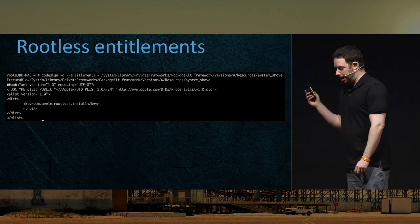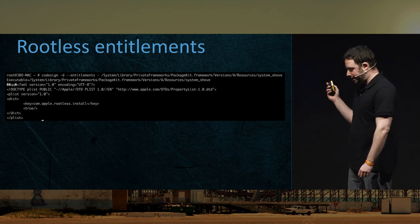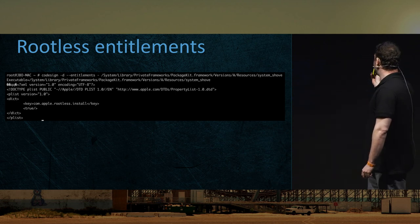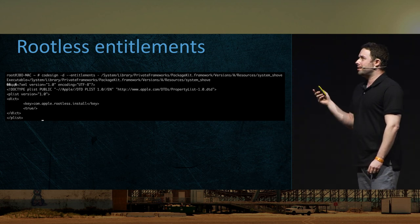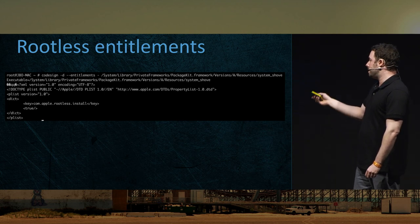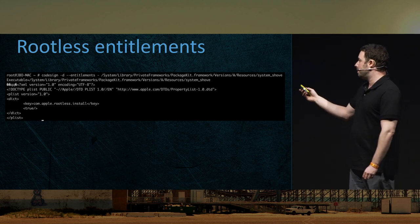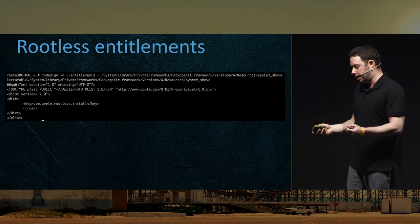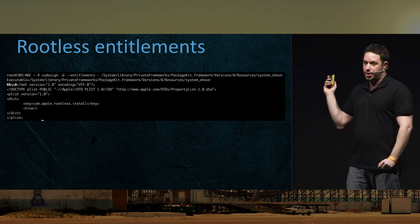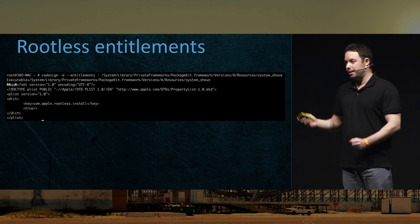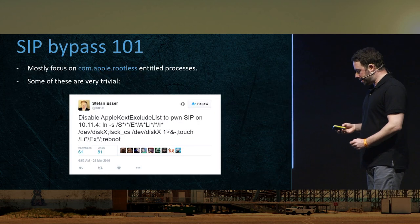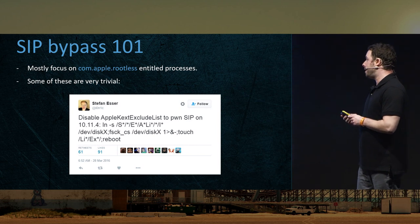That's the obvious attack surface for SIP bypasses. Here's an example of an entitled Apple binary — in this case, system_shove — which has com.apple.rootless.install as part of its entitlements, so it's able to bypass SIP file system checks. If you were able to inject some code there or make it do whatever you want, you bypass SIP.